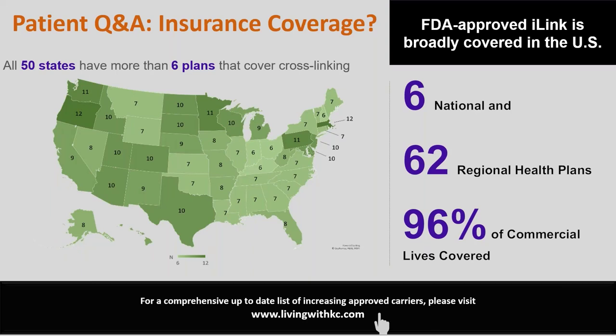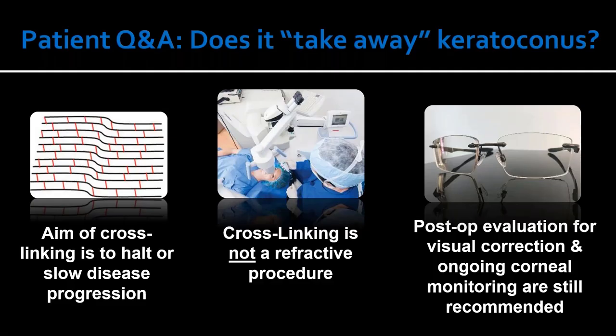When cross-linking first launched five years ago it was not covered by insurance, creating a financial burden. Today that has changed considerably: across all 50 states, at least six major plans cover cross-linking, with 96% of commercial lives covered. The majority of patients will have insurance coverage. iLink is the marketing term for the FDA-approved cross-linking procedure.